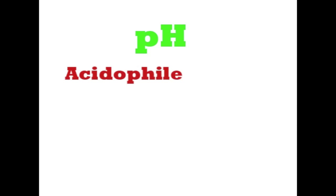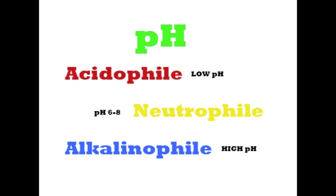Acidophiles live in low pH, whereas neutrophiles live in about the middle and alkalinophiles live in high pH.